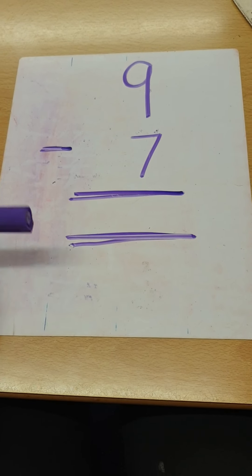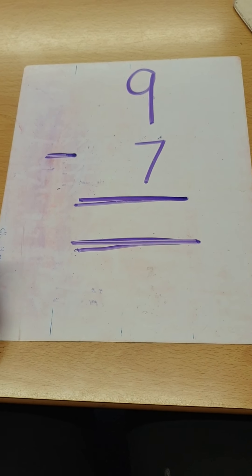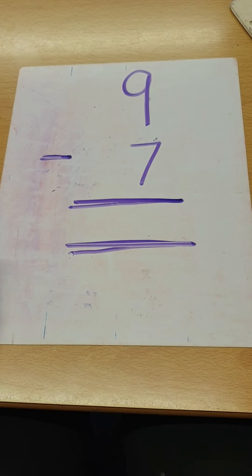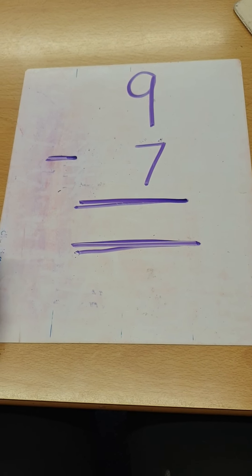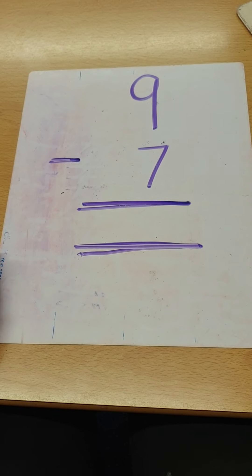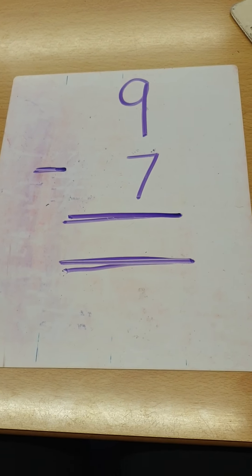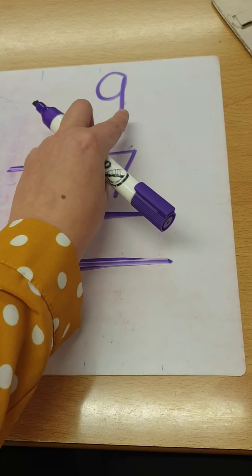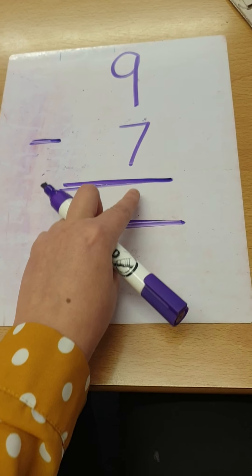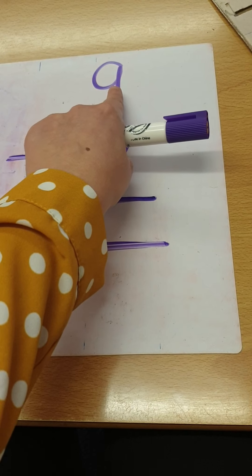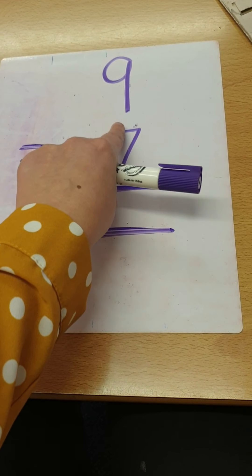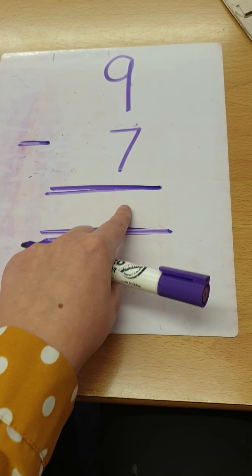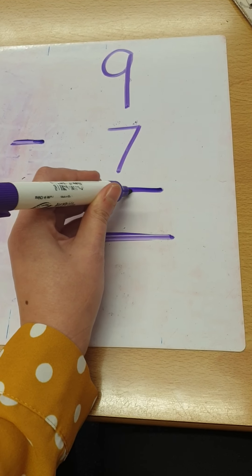I want everybody to put nine in their head and take away seven. Can you do that for me now? Excellent work — it is two. Now I'm going to make sure that I put my answer in the ones column. I'm going to put my finger on nine, follow it down, down, down, and then when I get into my line and it's in the ones column, I'm going to write the number two there.